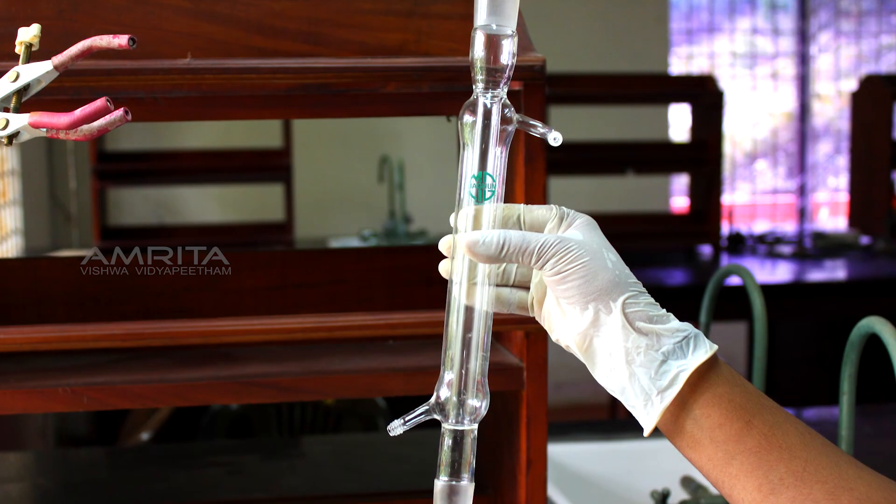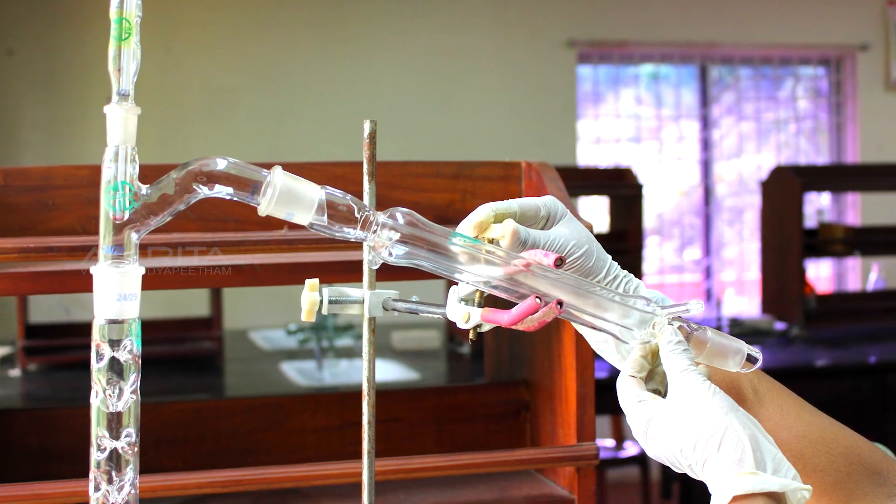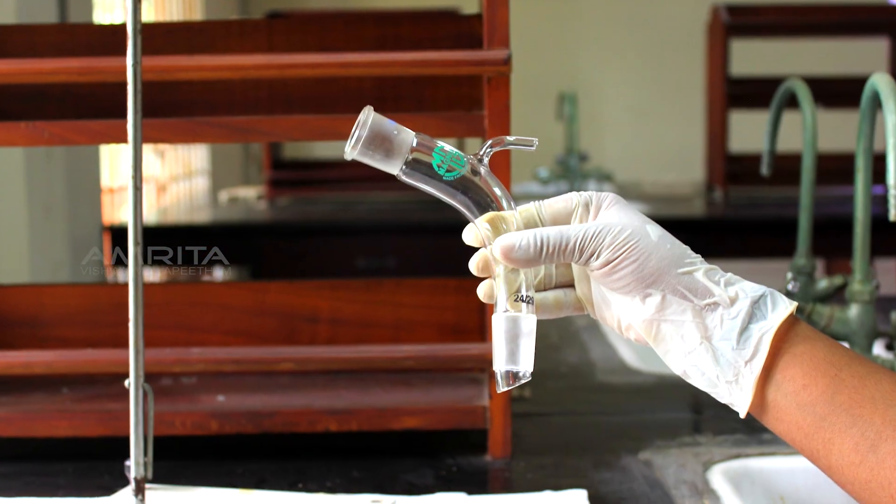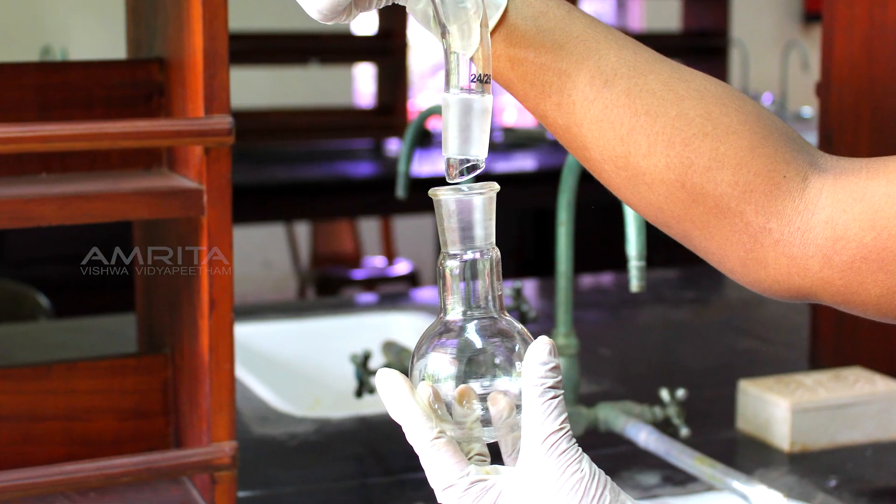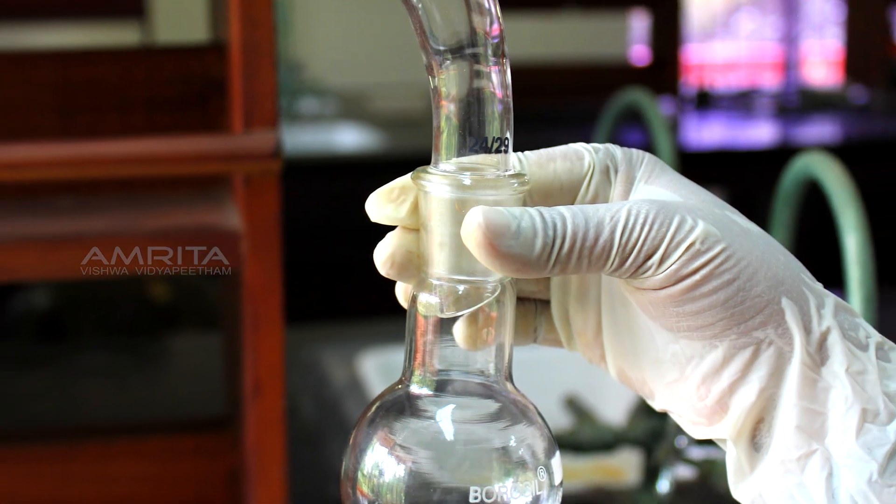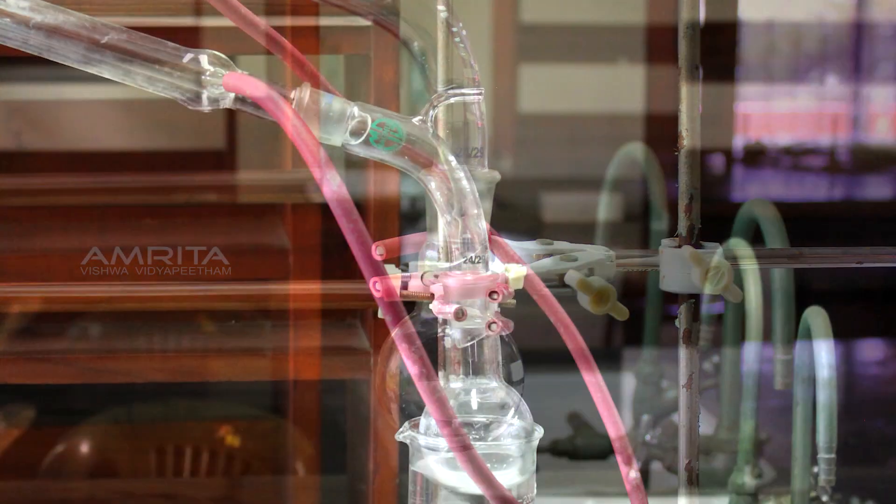Connect a water condenser to the outlet of the distilling head and clamp it. Now, connect a vacuum adapter to the water condenser and 100ml RB flask to the vacuum adapter. Clamp the RB flask and place it in a beaker containing water.